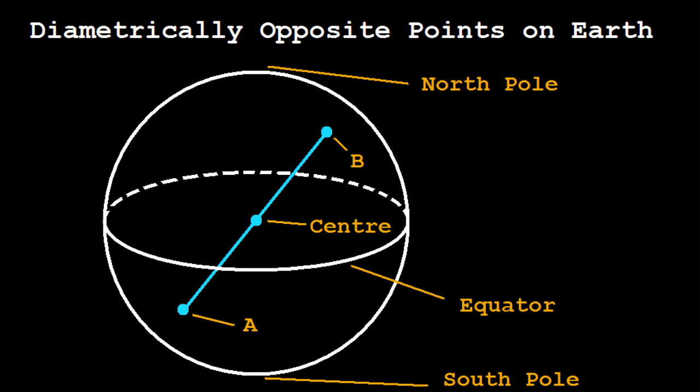What if I told you that right now there are an infinite number of opposite pairs on the Earth's surface with exactly the same temperature? Bizarre, eh?